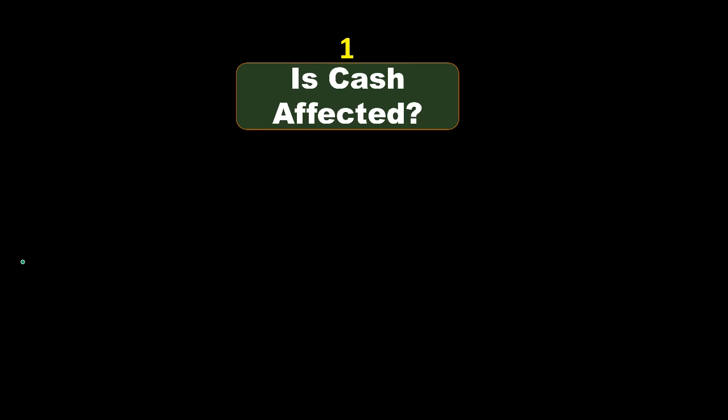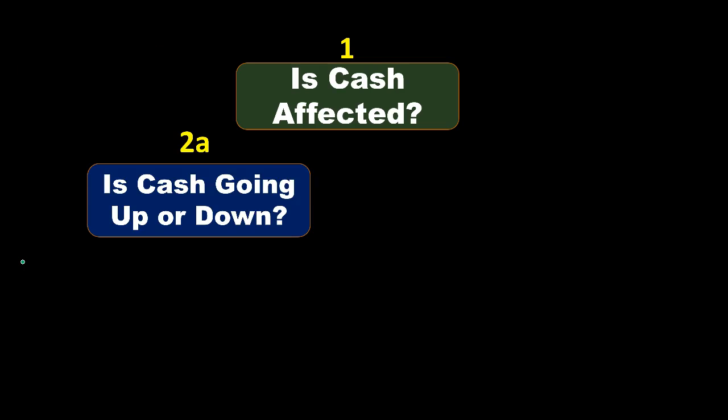Here is our list of questions we're going to ask every time. First: Is cash affected? We're recording a transaction — journalizing something that happened in financial data. If cash is affected, we then ask: is cash going up or down? Once we know whether it's going up or down, we can write that down and say it's going to be debited or credited.